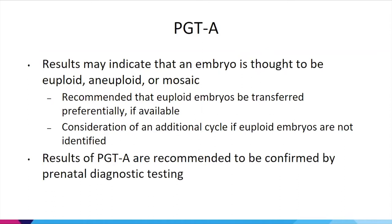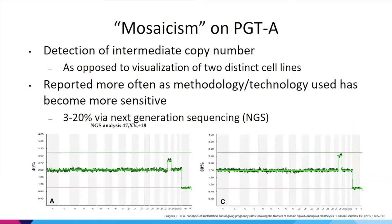Results from embryo testing can indicate that an embryo is euploid, aneuploid, or mosaic. It's typically recommended that a euploid embryo be transferred preferentially. If unavailable, an additional cycle may be considered, though that may not be feasible emotionally or financially. Some families may decide to consider transferring mosaic embryos, as studies have shown these embryos have reproductive potential. Regardless of results, prenatal diagnostic testing is recommended to confirm embryo screening results, as it is considered more accurate.